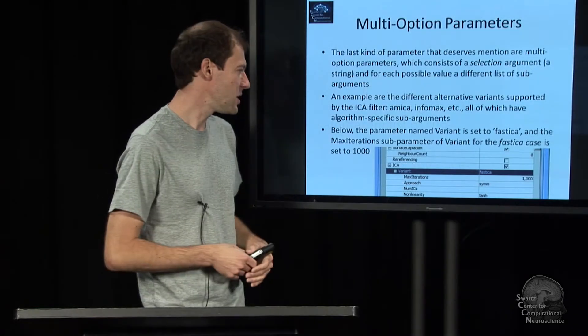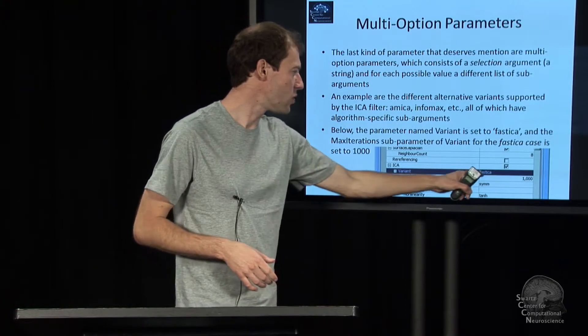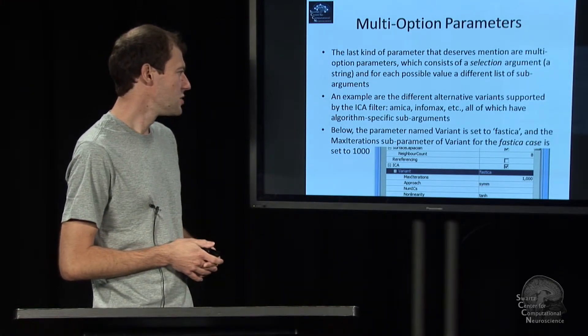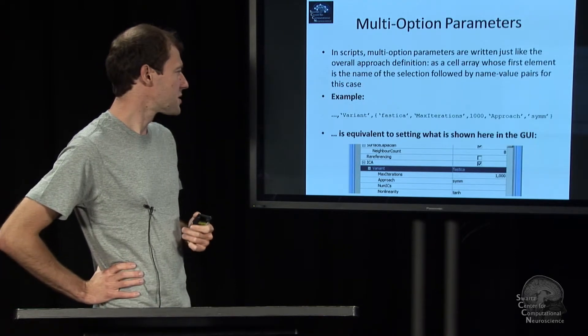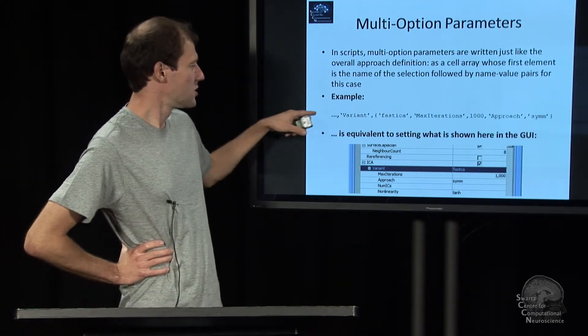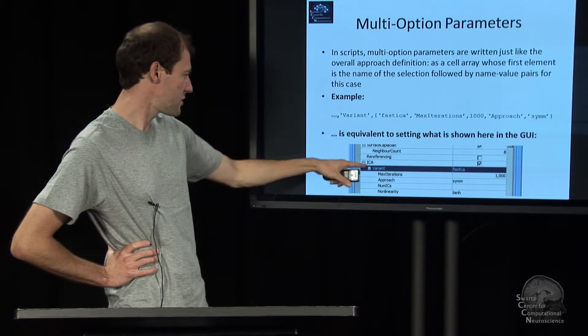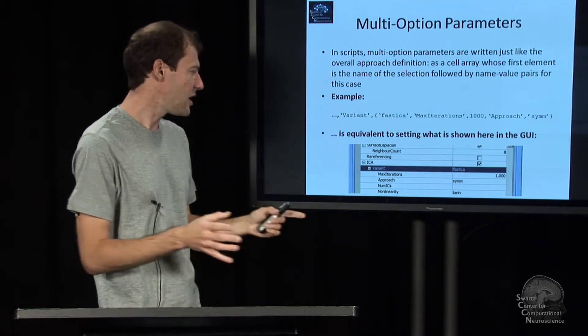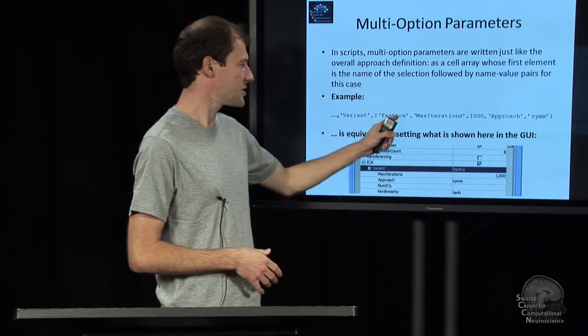Ultimately what you do for a parameter like this is you say which case you want, in this case a fast ICA case, and then you can go on and say how you want to override the defaults if you want to override the defaults. In a script, the way in which this would work is you're assigning something to the variant parameter. Here's the variant parameter, and the first thing in the cell array is the value for the selection, it's kind of a selector.